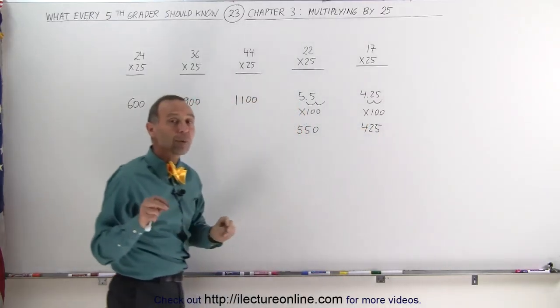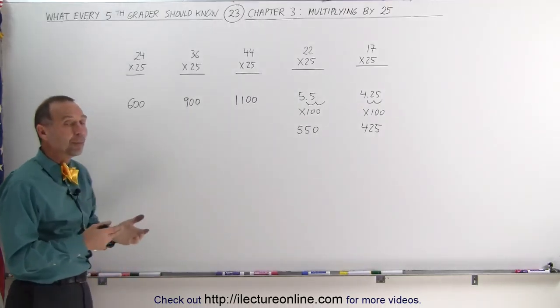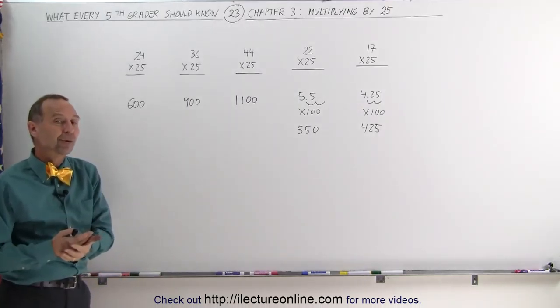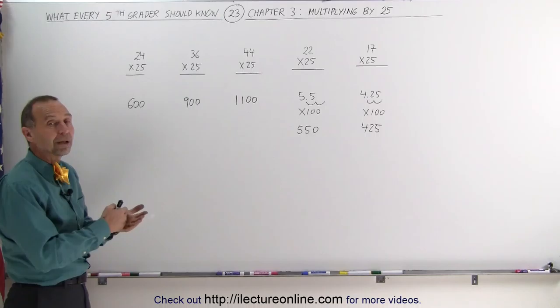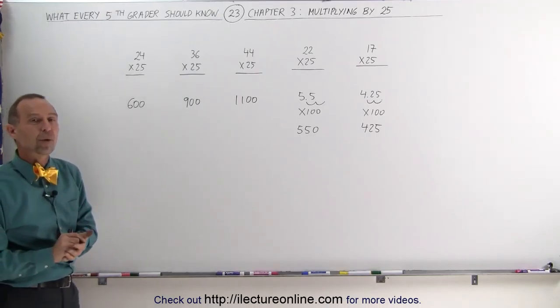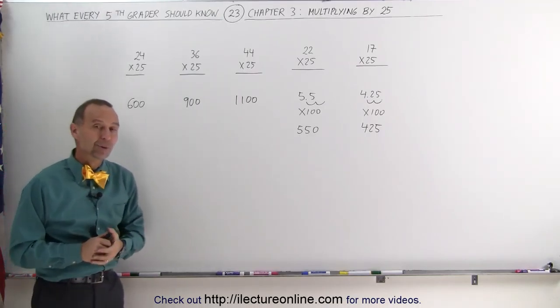That's how we multiply very quickly, in our head, a number by 25. Divide by 4, add two zeros, or divide by 4, and move the decimal place over twice. And that's how we do that.